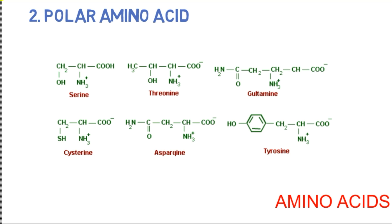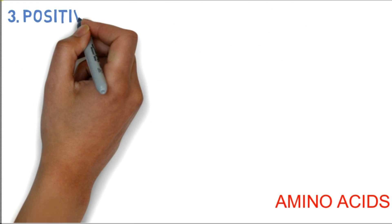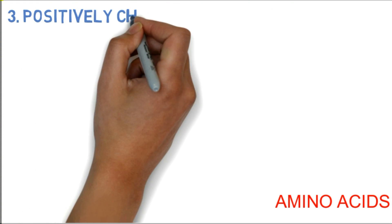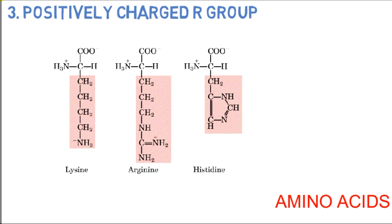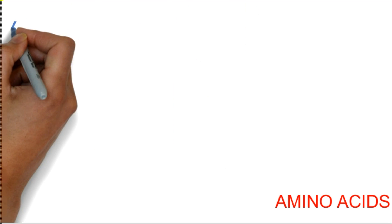The third type of amino acid is the positively charged R group. There are three positively charged amino acids: lysine, arginine, and histidine.